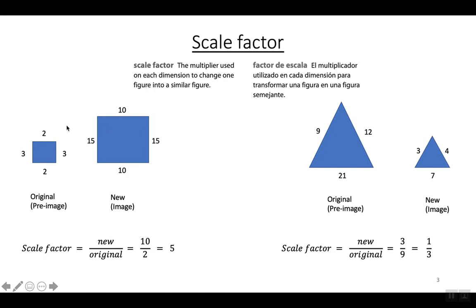Let's pick the top side which goes from 2 to 10. You always put the measurement of the new side on the top and the original one on the bottom. So it went from the smaller rectangle to the bigger rectangle. I'm going to put the length of the new side on top — 10 — and on the bottom the length of the original side, which was 2. So the scale factor is 10 over 2, and when you simplify that, the scale factor is 5.